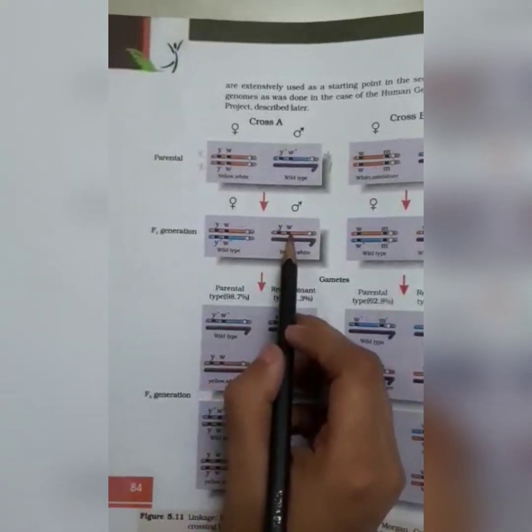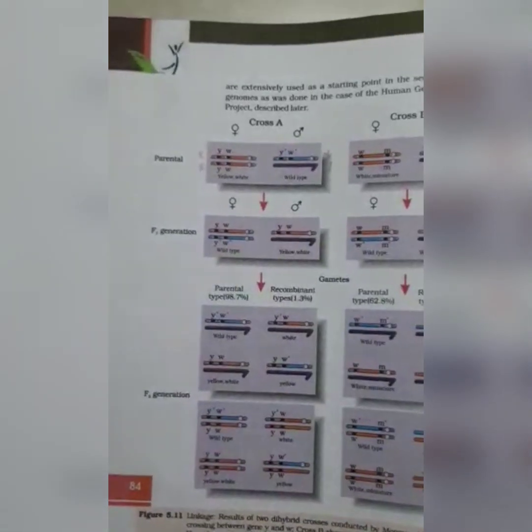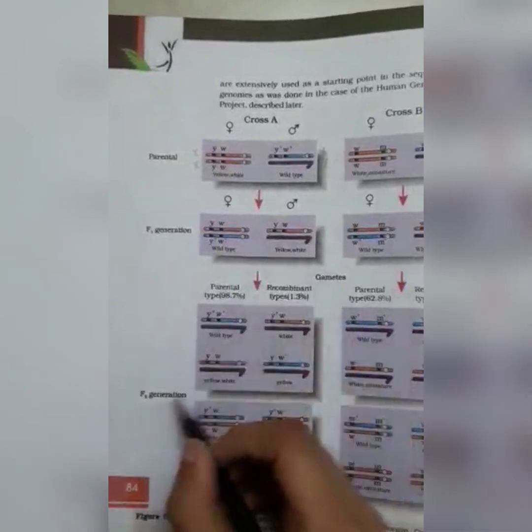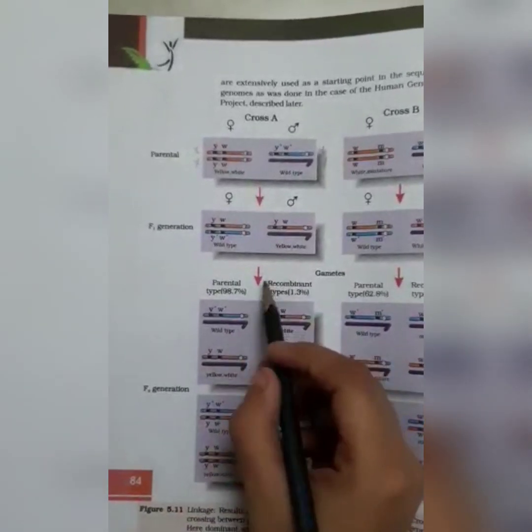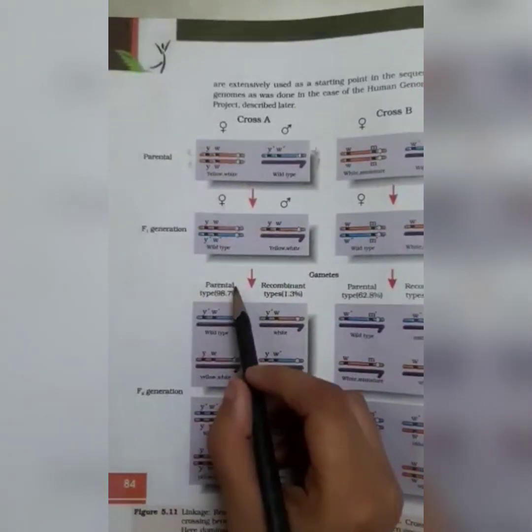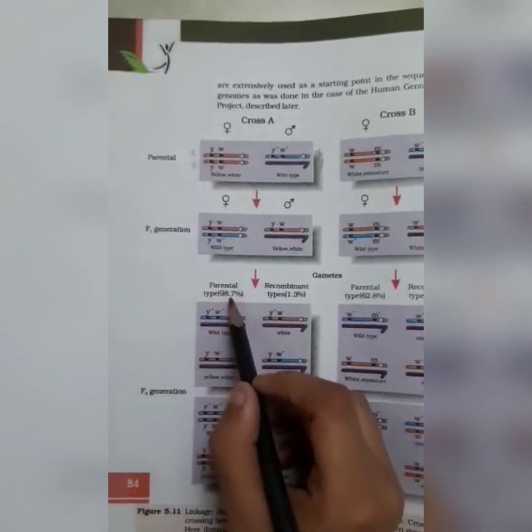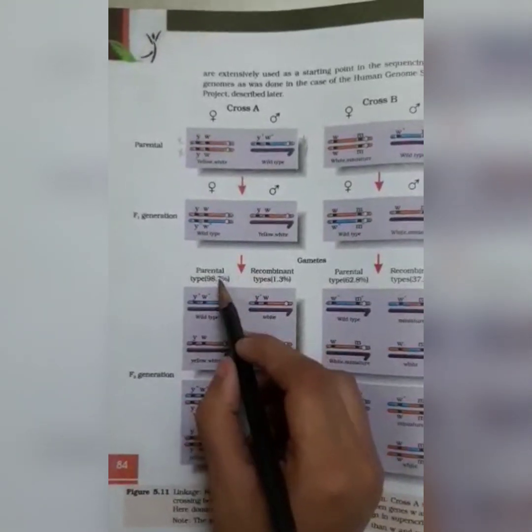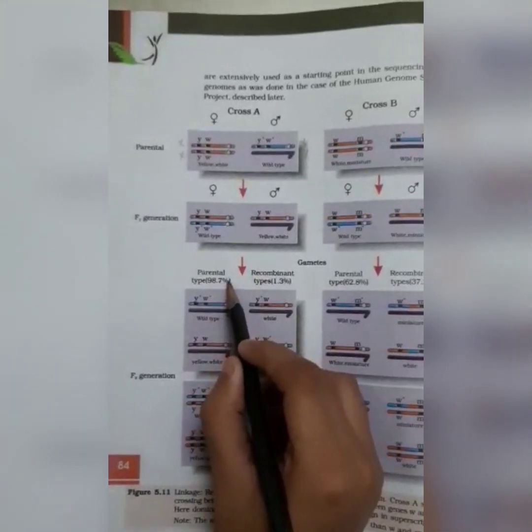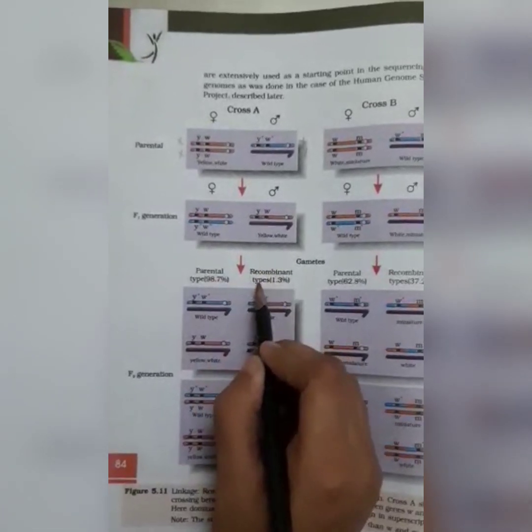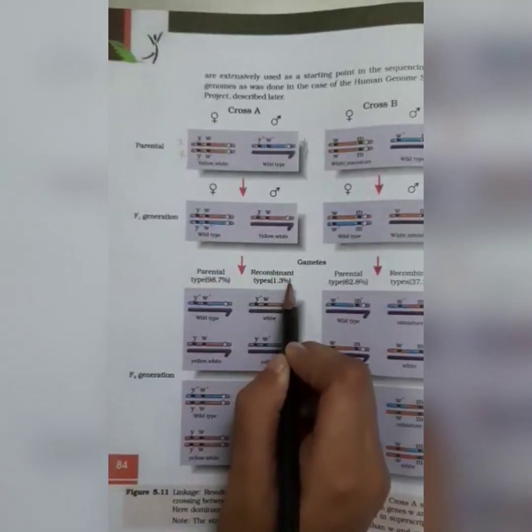When these are crossed, the F1 generation are crossed, we will get the F2 generation which is where the parental type was 98.7% and the recombinant type was 1.3%.